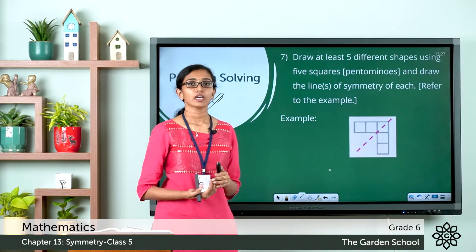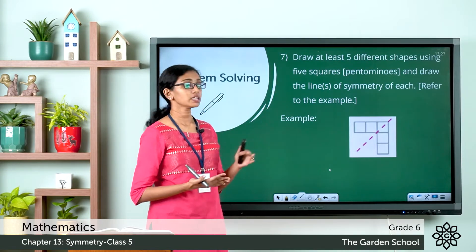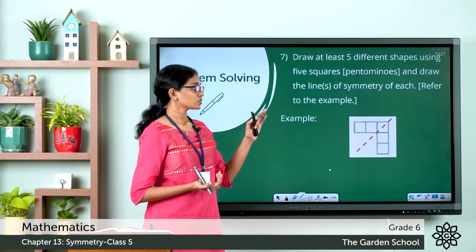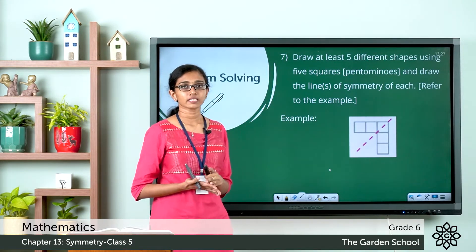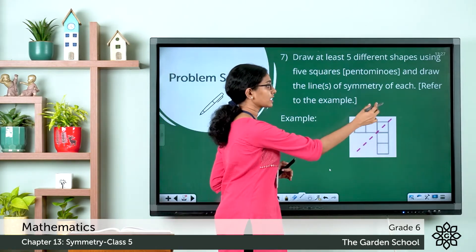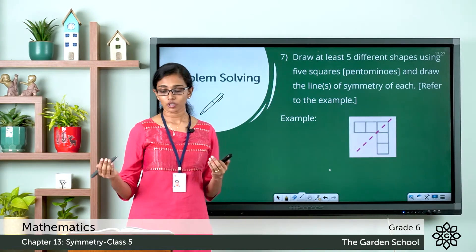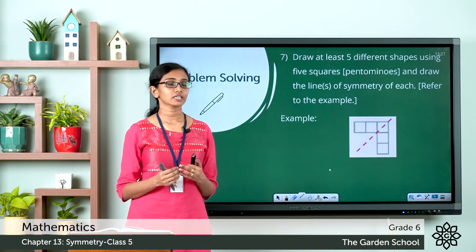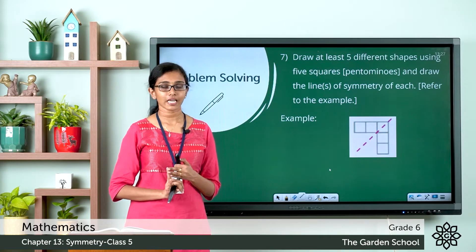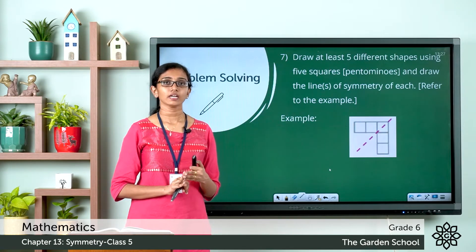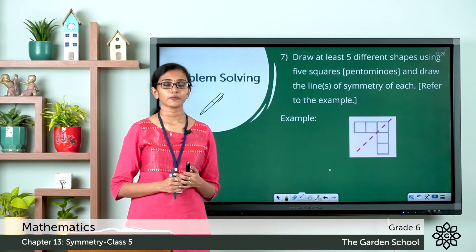An example of a pentomino is given — you can see five squares connected edge to edge, all of equal size. You have to draw shapes like this in the given grid, making sure they are all of different shapes. You also have to show the lines of symmetry — for example, the example shows a diagonal line of symmetry. Make sure all pentominoes are different shapes and lines of symmetry are clearly marked.